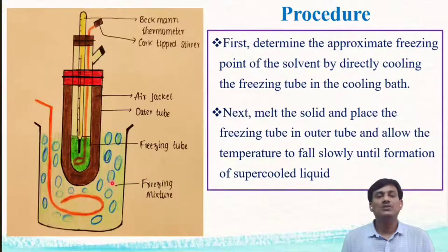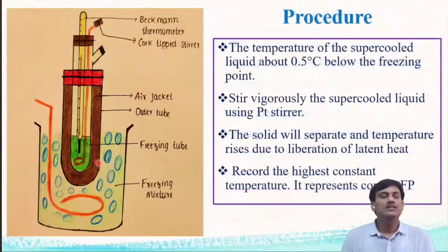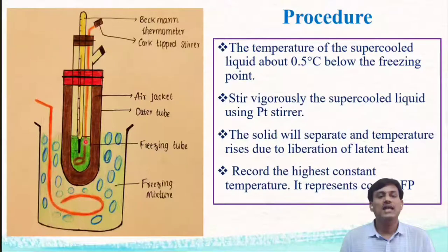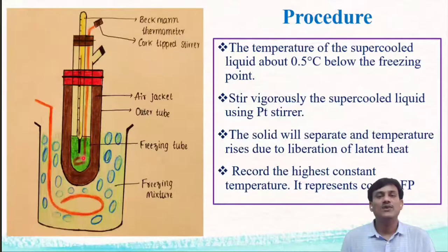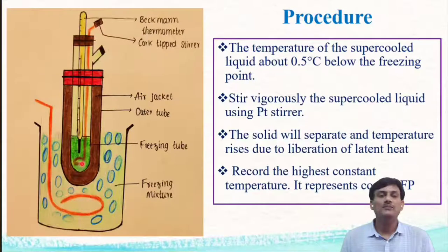When the whole setup is placed on the cooling bath, there is a gradual decrease in temperature and the liquid is converted into a supercooled liquid. When the temperature of the supercooled liquid is about 0.5 degrees centigrade below the freezing point, we stir the supercooled liquid with the platinum stirrer. This causes conversion of the supercooled liquid into solid, and there is a rise in temperature due to release of latent heat. The temperature reaches a maximum constant value, which indicates the freezing point of the solvent.